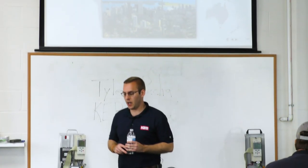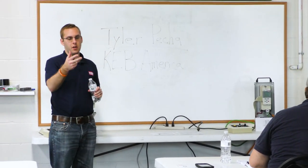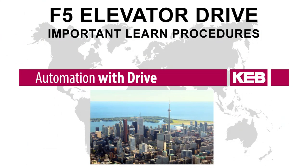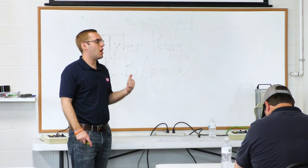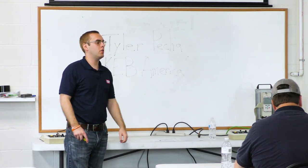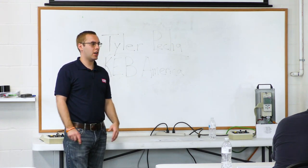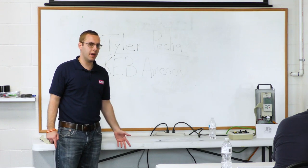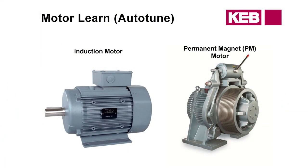I've got a few slides that go through a visual representation of the inertia and feedforward — what they do and how they work. We went through the auto-tune, the encoder learn, and talked about how to do the inertia learn, but what do these learns actually do? Why do you want to do them, and which ones should you do for which application?